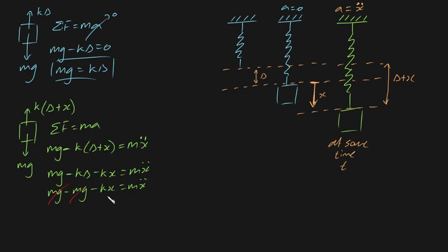Notice the cancellation here. These two cancel off, leaving us with the final amazing result that mx double dot plus kx must be equal to zero. This is a well-known vibration formula. This is simple harmonic motion, right?